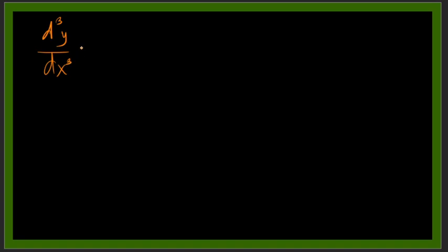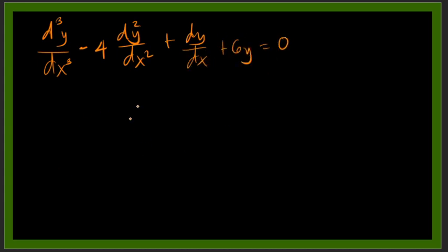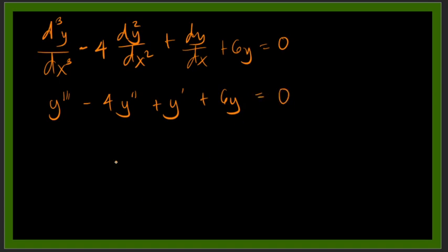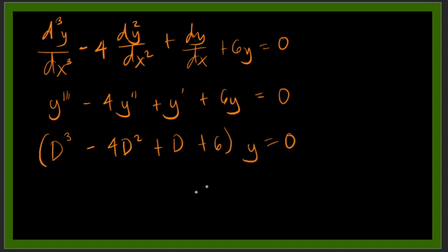For example, consider this higher order differential equation: the third-order derivative of y minus 4 times the second-order derivative of y plus dy/dx plus 6y equals zero. We can write this as y-triple-prime minus 4y-double-prime plus y-prime plus 6y equals zero. Using the D-operator, this becomes: (D³ − 4D² + D + 6)y = 0.